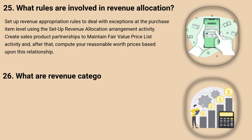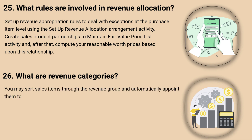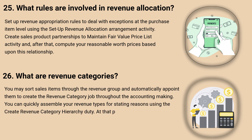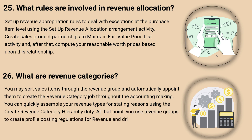26. What are revenue categories? You may sort sales items by revenue group and automatically assign them to create the revenue category throughout the accounting process. You can assemble your revenue types for reporting purposes using the Create Revenue Category Hierarchy. You then use revenue groups to create profile posting rules for revenue and drive all the accounting about the purchase items to specific ledger profiles.